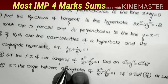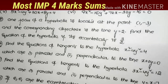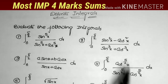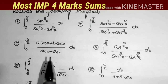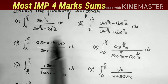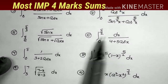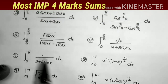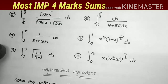These are the list of important problems from the hyperbola chapter — very important sums. The next chapter is definite integrals. The important sums from definite integrals: problems 1 through 5 are of the same model, problems 6 and 7 are of the same model, and problems 8 through 10 are of the same model. These are the list of important sums from definite integration.